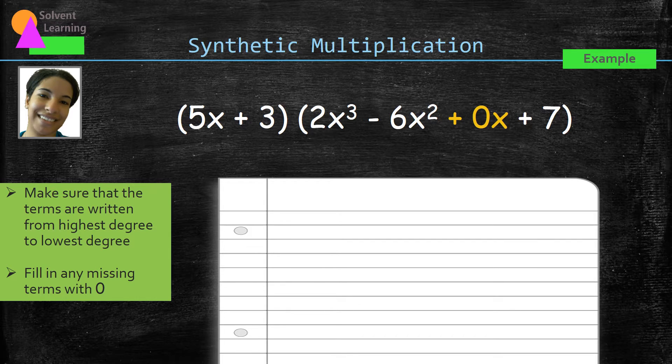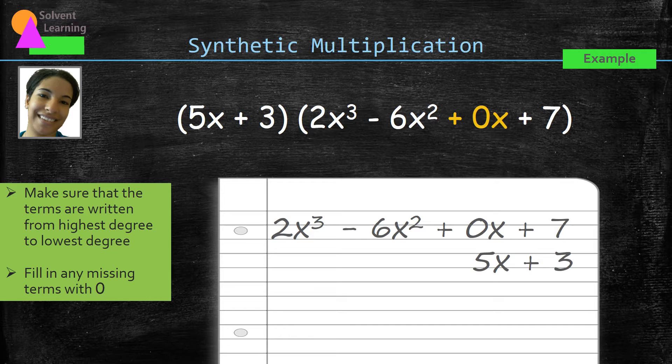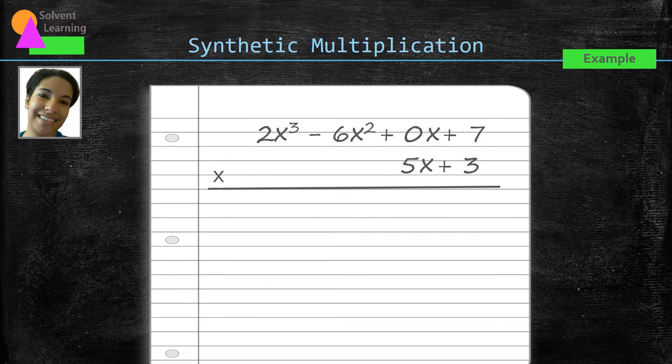Now we can write this over to set it up for multiplication. It's always a little easier to write the longest polynomial first. So we'll copy that over, and then the shorter polynomial goes underneath. And we set it up for multiplication, just like we would multiply any two numbers together. As we mentioned earlier, the goal of synthetic multiplication is to focus just on those numbers first, the coefficients and constant terms. So let's get rid of all those variables.